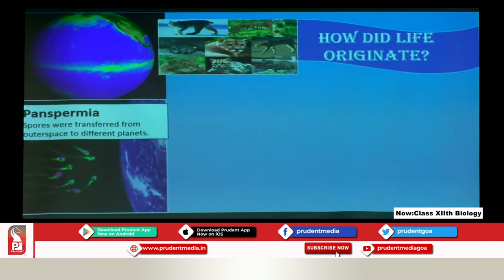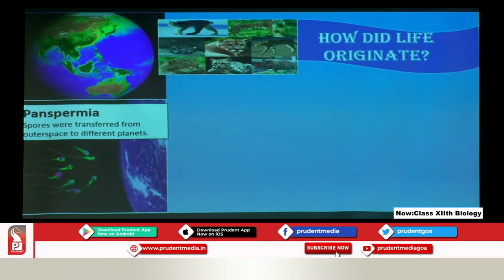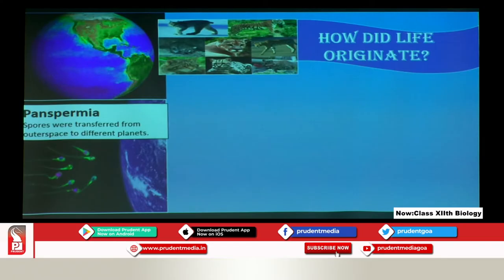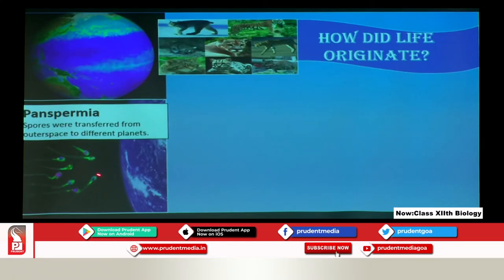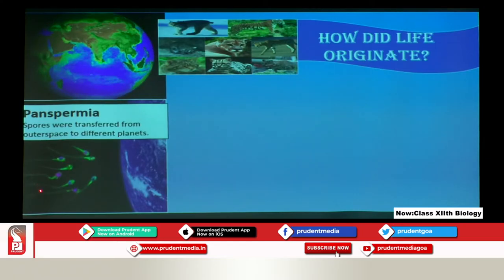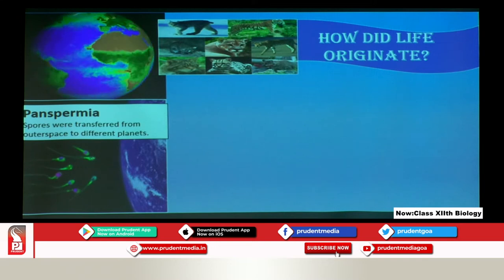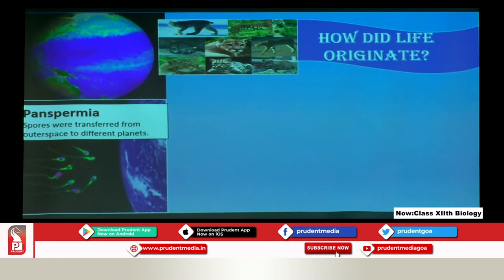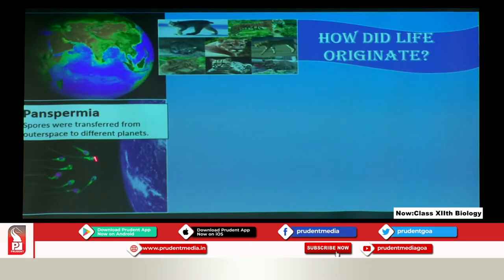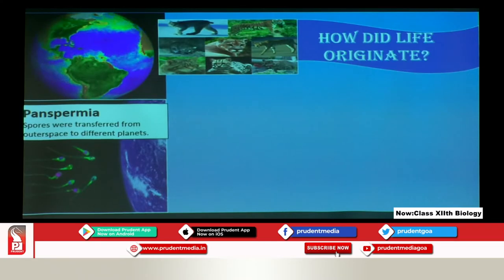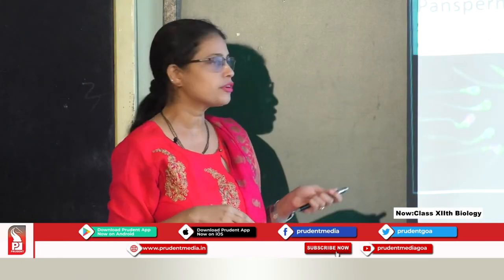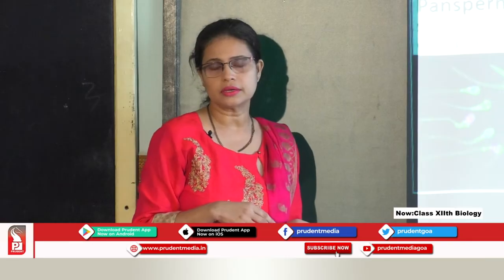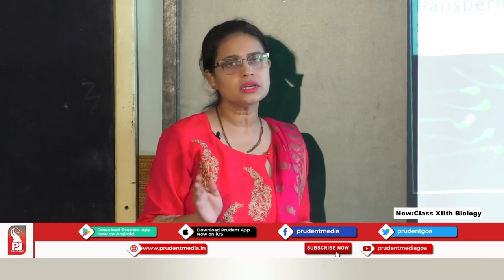Various theories have been put forth for how life came into existence. The first is Panspermia, given by Greek philosophers. According to them, there must have been spores coming from outer space, scattered not only on Earth but on other planets too — meaning life was distributed on different planets. But this theory is totally discarded because there was no scientific proof for it.